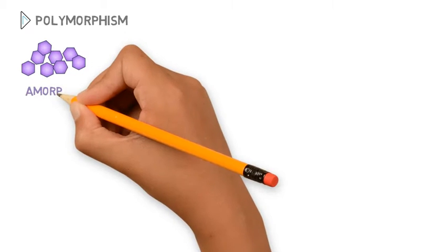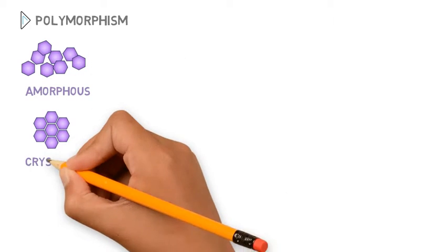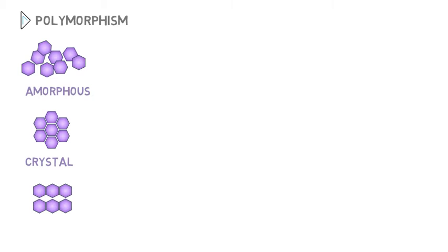the polymorphism. The API can be amorphous or crystal, and there may be different crystals for the same API, which we call different polymorphic forms.